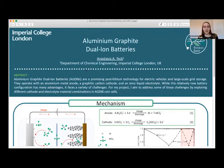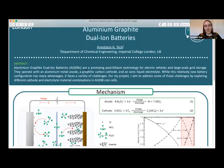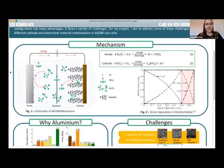The first successful AGDIB was reported in 2015 and has since gained quite a lot of attention. This battery consists of an aluminium metal anode, a graphitic carbon cathode, and an ionic liquid electrolyte. It is not your typical rocking chair type cell, but has a dual ion mechanism.